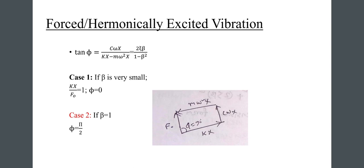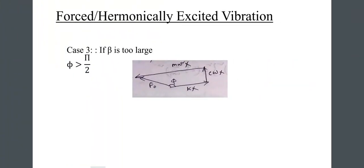There is a figure where the phase angle phi equals 90 degrees. We can write: tan(phi) equals c·omega·X divided by (k·X minus m·omega-squared·X), which equals 2·zeta·beta divided by (1 minus beta²). Case 1: if beta is very small, k·X / f-naught equals 1 and phi equals 0. Case 2: if beta equals 1, then phi equals pi/2. When beta is large, phi is greater than pi/2.